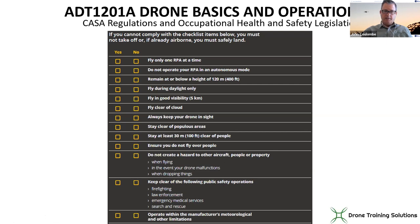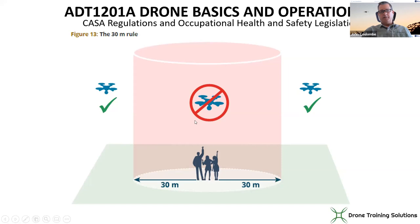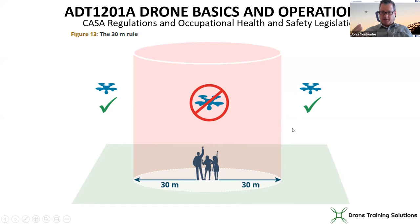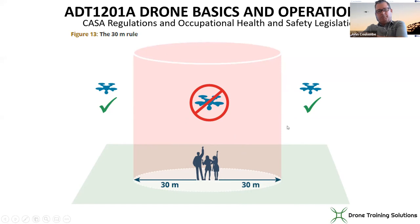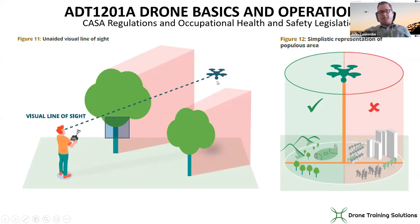Keep the drone in sight, stay clear of populous areas, stay at least 30 meters from people — you can't fly over people. Don't create a hazard, such as flying over a football match. You're not allowed to fly over emergency situations like crashes or fires. Operate within the drone's rated capabilities — if your manual says the drone is rated up to 40 km/h wind and you crash in 50 km/h wind, that could get you into trouble. Visual line of sight means you must be able to see the drone at all times.